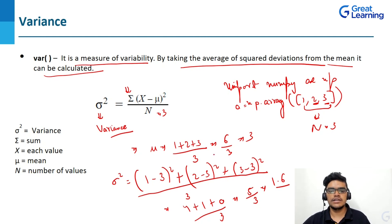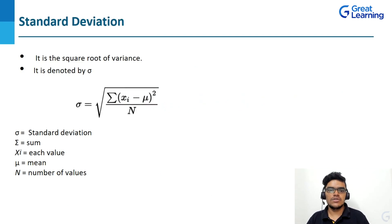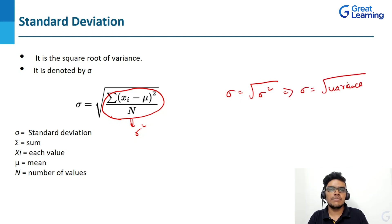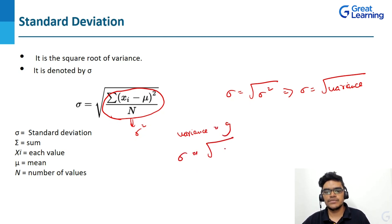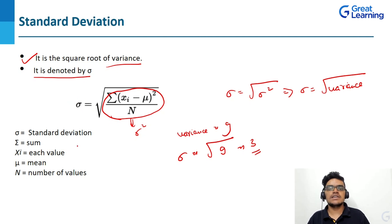Using NumPy, I just write np.var(a) and pass the variable as a parameter to easily calculate variance. Now let's see how to calculate standard deviation. Standard deviation sigma is the square root of the variance (sigma squared). For example, if variance is 9, then sigma = sqrt(9) = 3. Standard deviation is denoted by sigma and is the square root of variance.